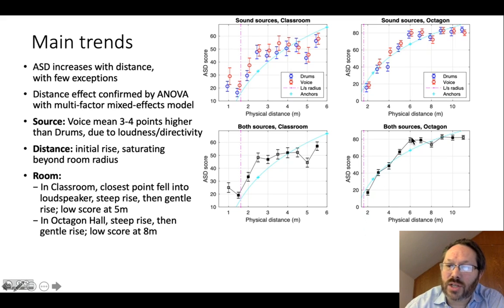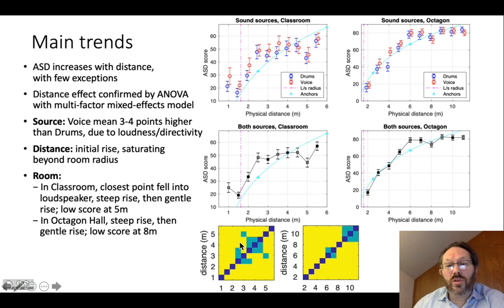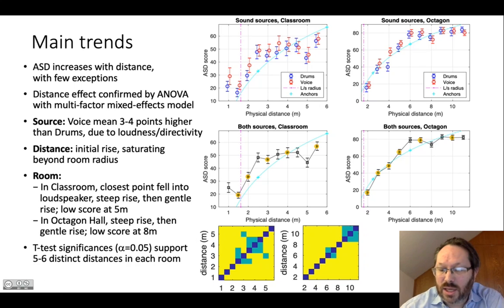And for the octagon, again, we have a steep rise and a gentler rise and a low score this time at around eight. So we're interested to test whether there were perceptually distinct distances from these results. And a paired t-test of comparing each of these indicates in yellow a great number of statistically significant differences. In many cases, they were different. But we did find some clusters where there were values that were not distinct one from another in both cases. Nevertheless, there were a number of points where we could get a distinct number of ratings in both cases, giving us five to six distinct distances in each room.